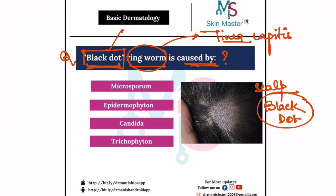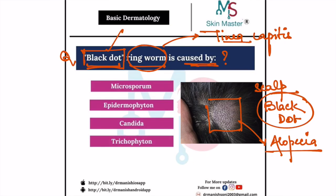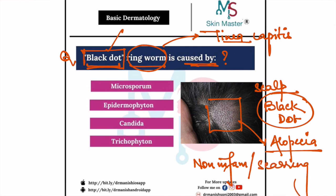Now, how to identify this condition — as you can see there is hair loss, so there is alopecia. Remember that this alopecia is non-scarring type, because this is non-inflammatory type of tinea capitis causing non-scarring alopecia. And as you can see in this patch there are multiple black dots which are visible, so this is what makes it black dot type.